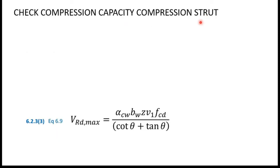Next, check the compression strut capacity using the equation: VRd,max = αcw·bw·z·v1·fcd / (cot θ + tan θ). This equation can be found in the Eurocode. We need to identify all the parameters involved.